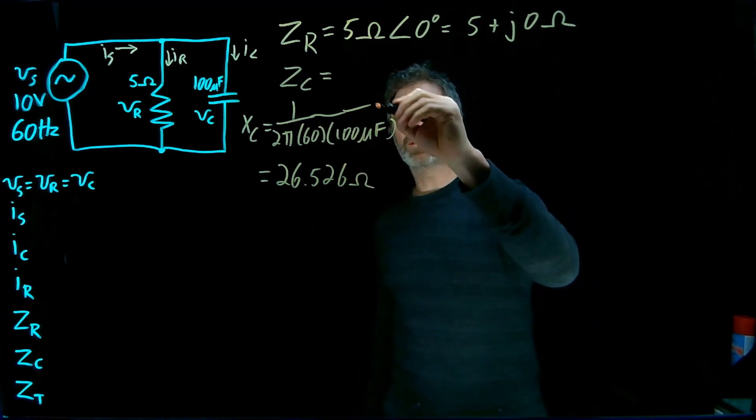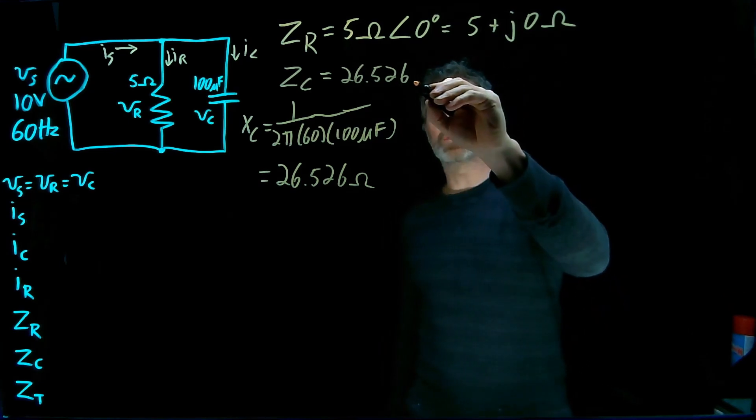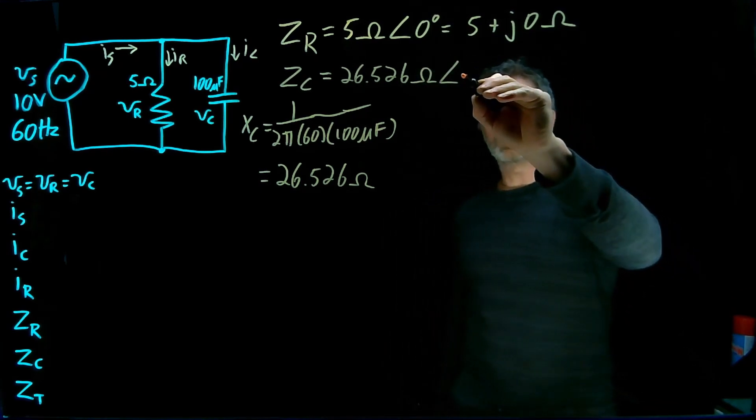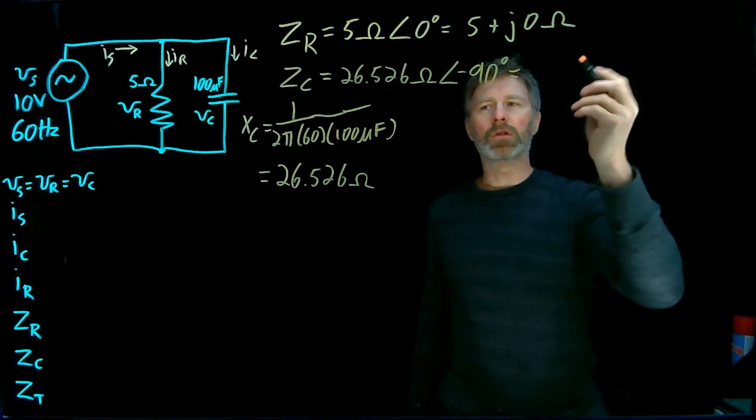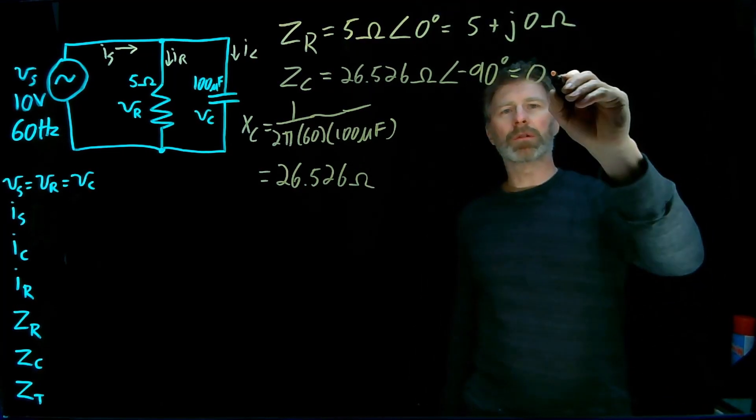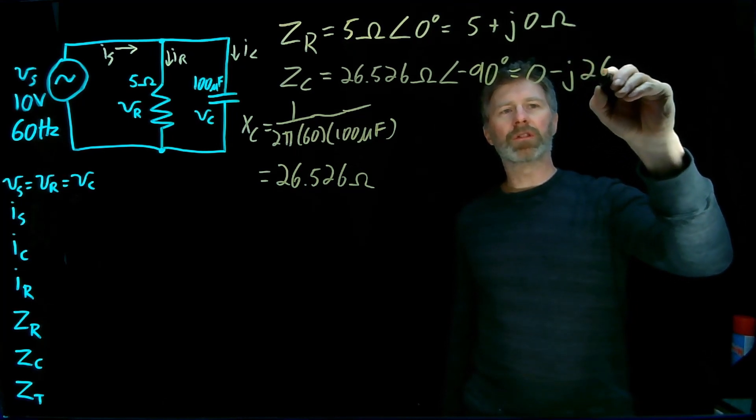So the magnitude of the impedance of the capacitor is 26.526 Ohms, and the phase angle is -90 degrees. In rectangular coordinates, it has no real component. It is all negative imaginary component.